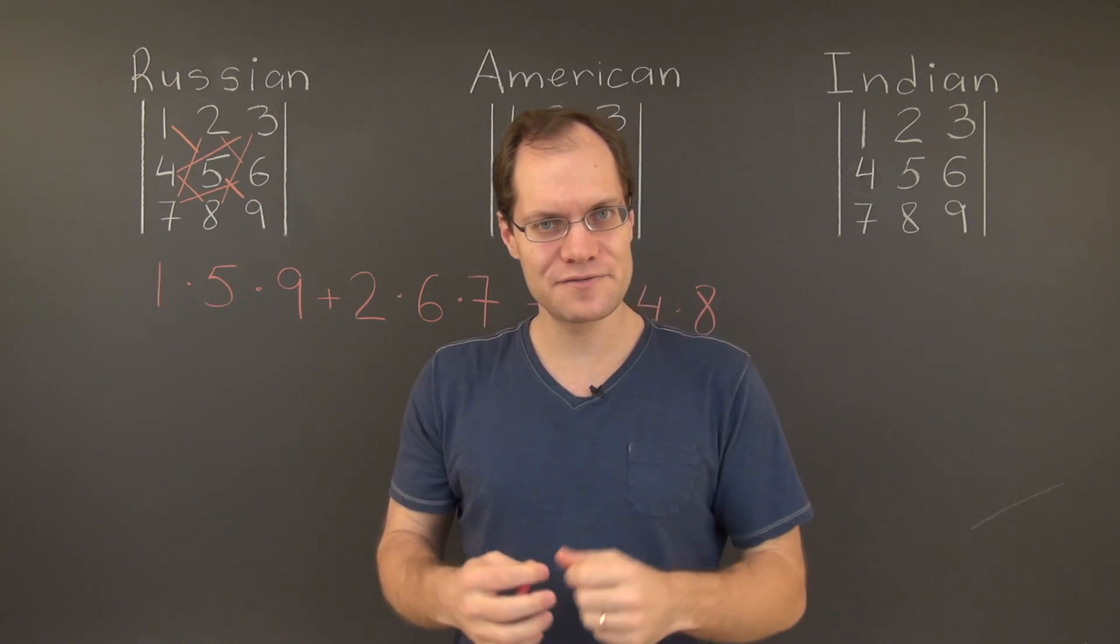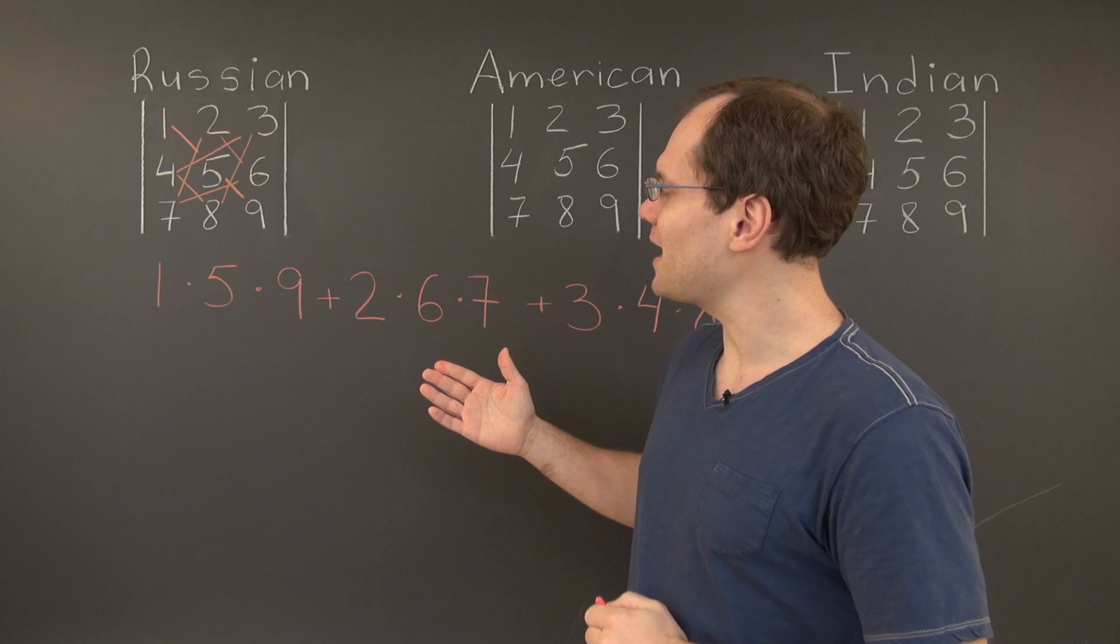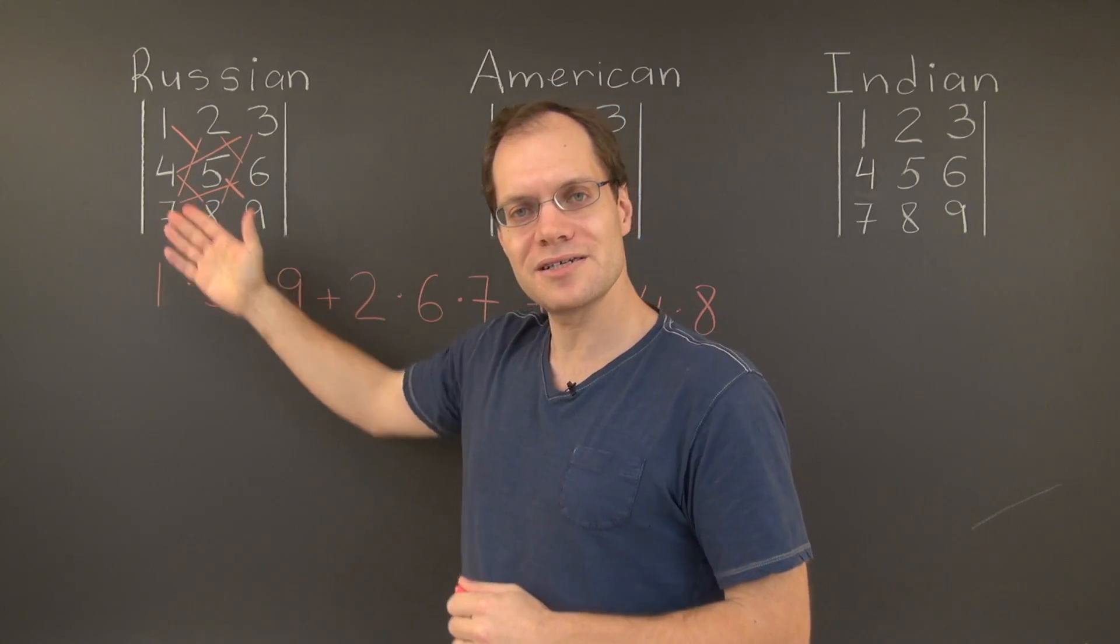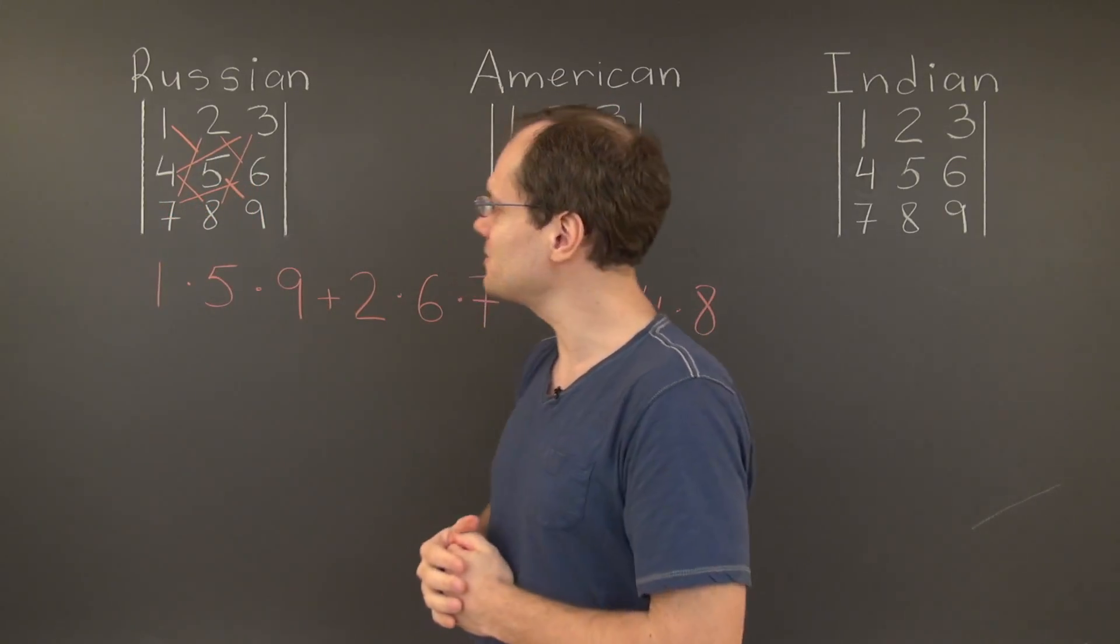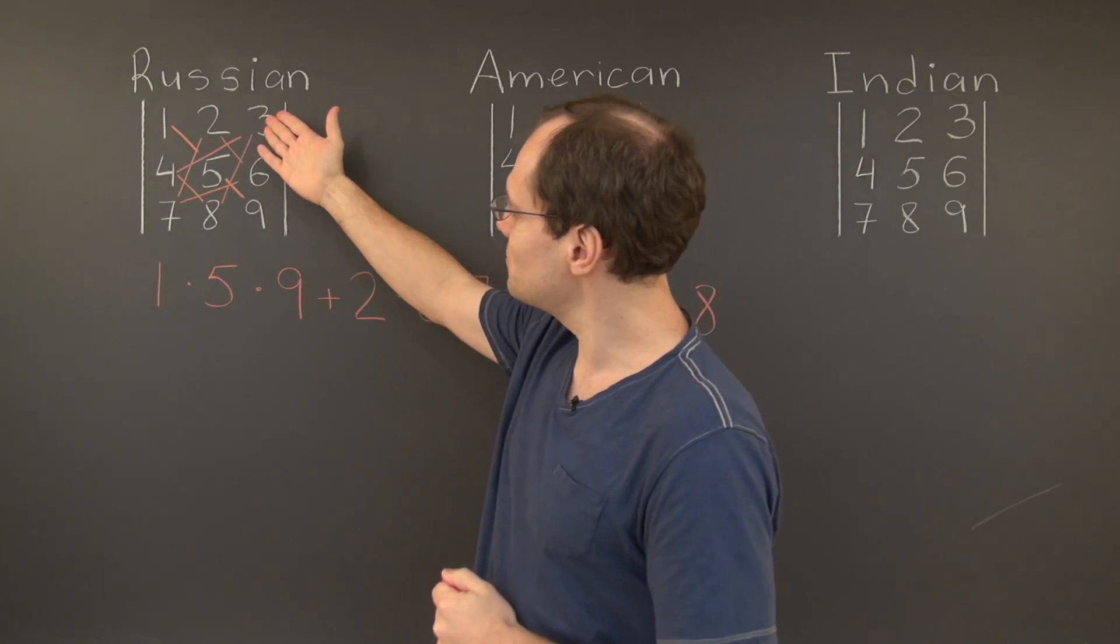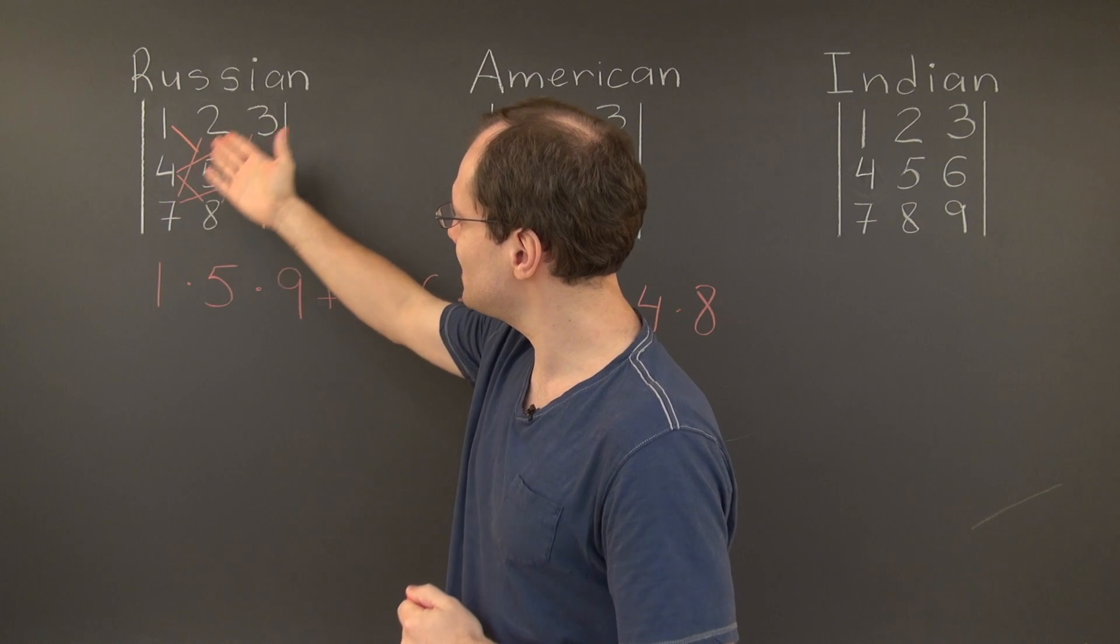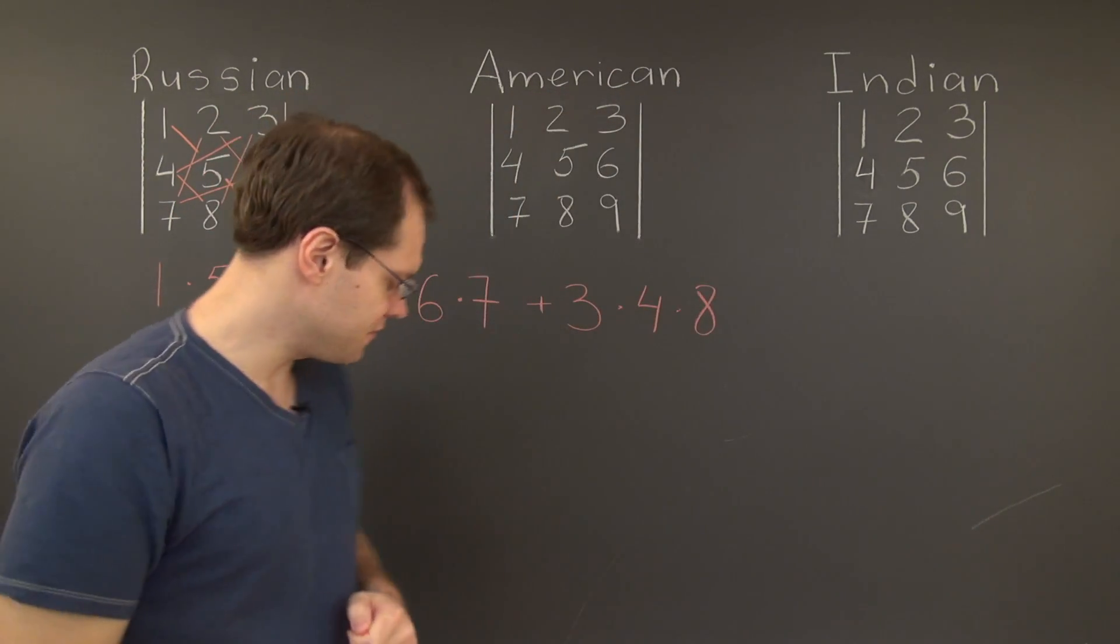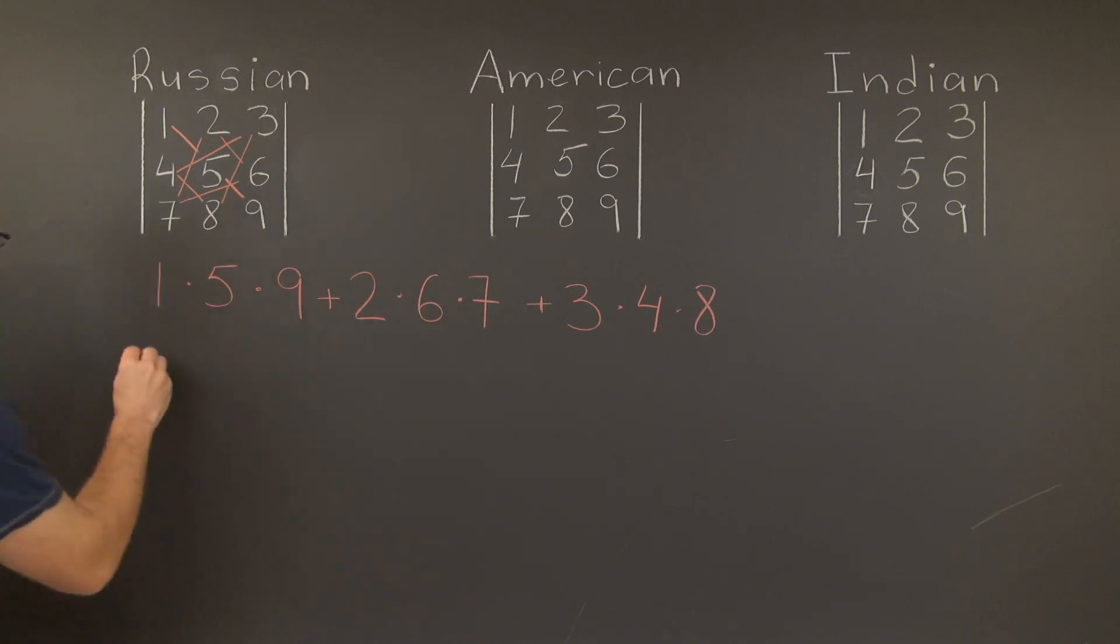Now the three negative terms come from similar patterns that are related to the opposite diagonal. So I won't draw them because then the drawing will definitely become quite messy. But the first term is three times five times seven. That's the opposite diagonal. So three times five times seven with a minus sign.